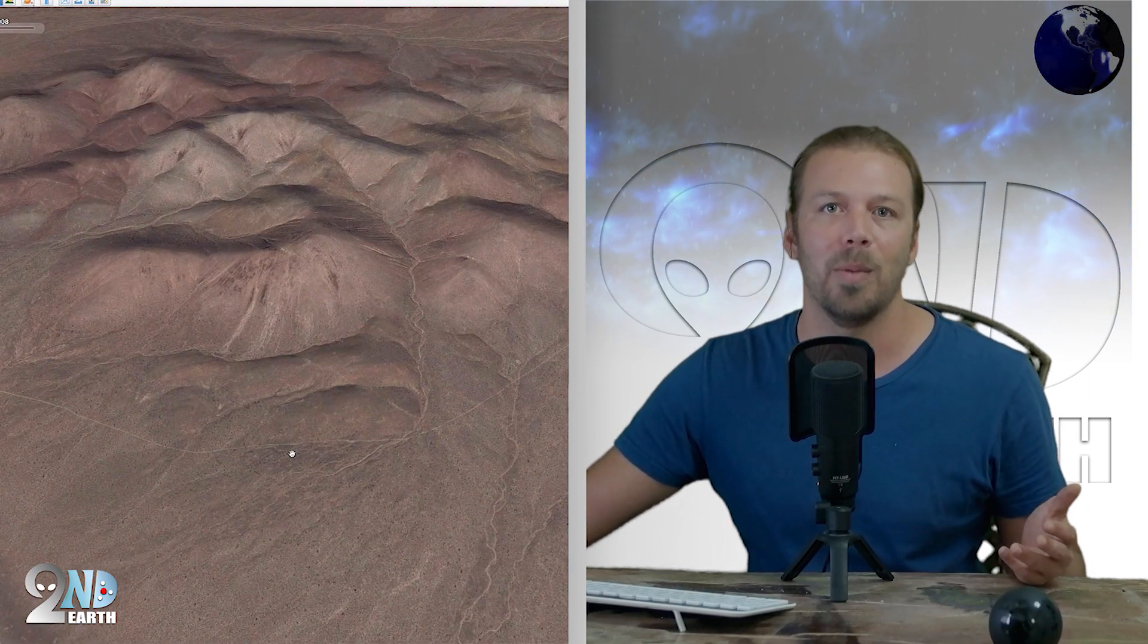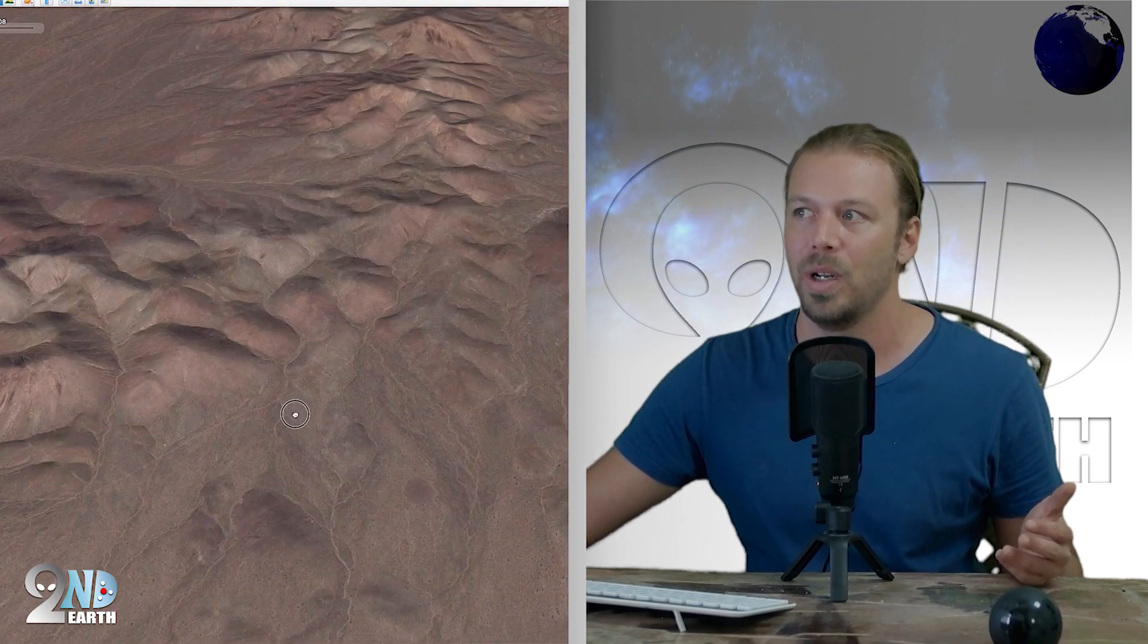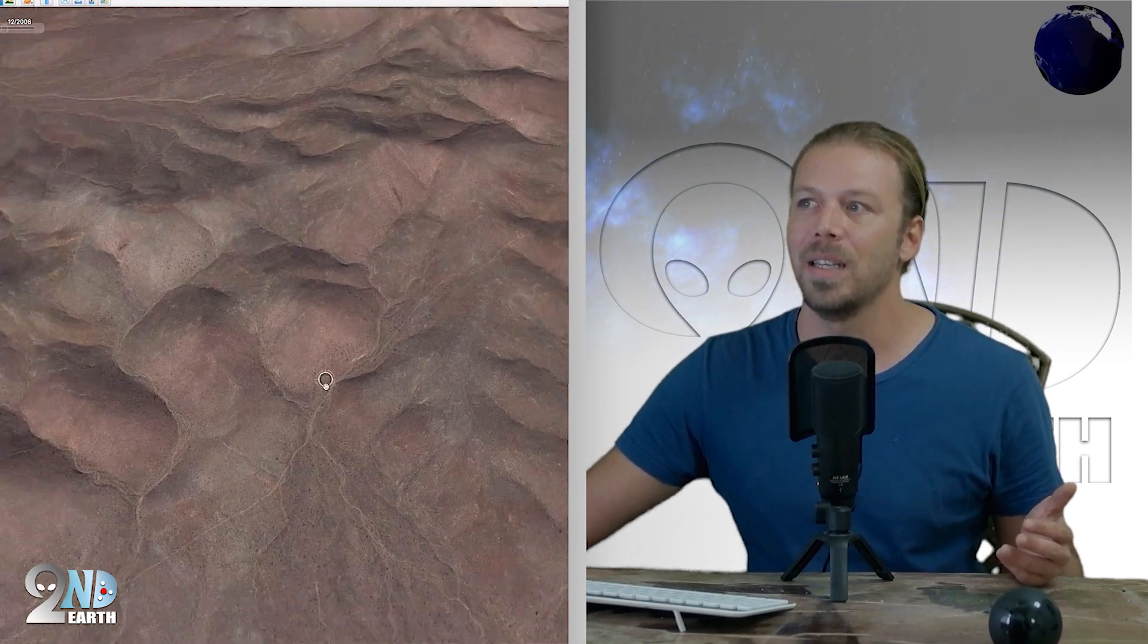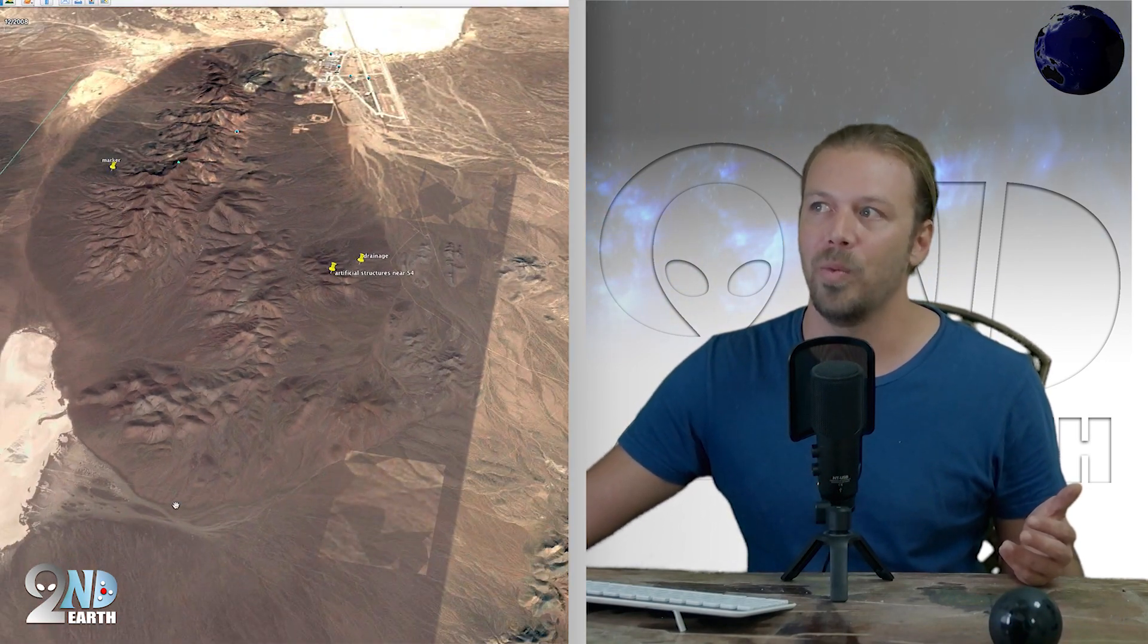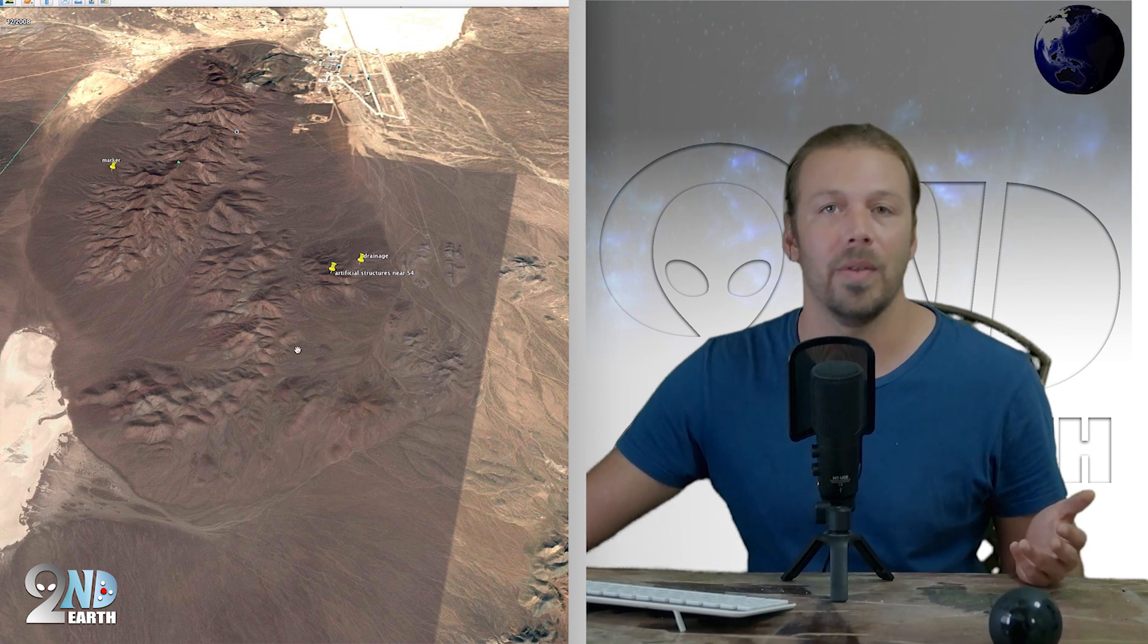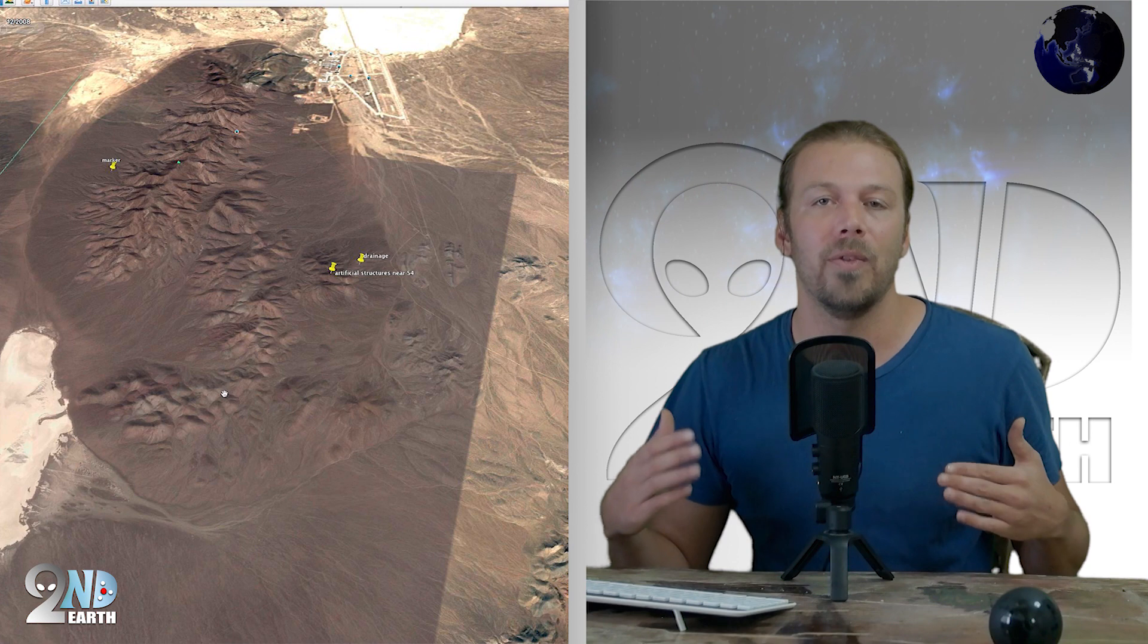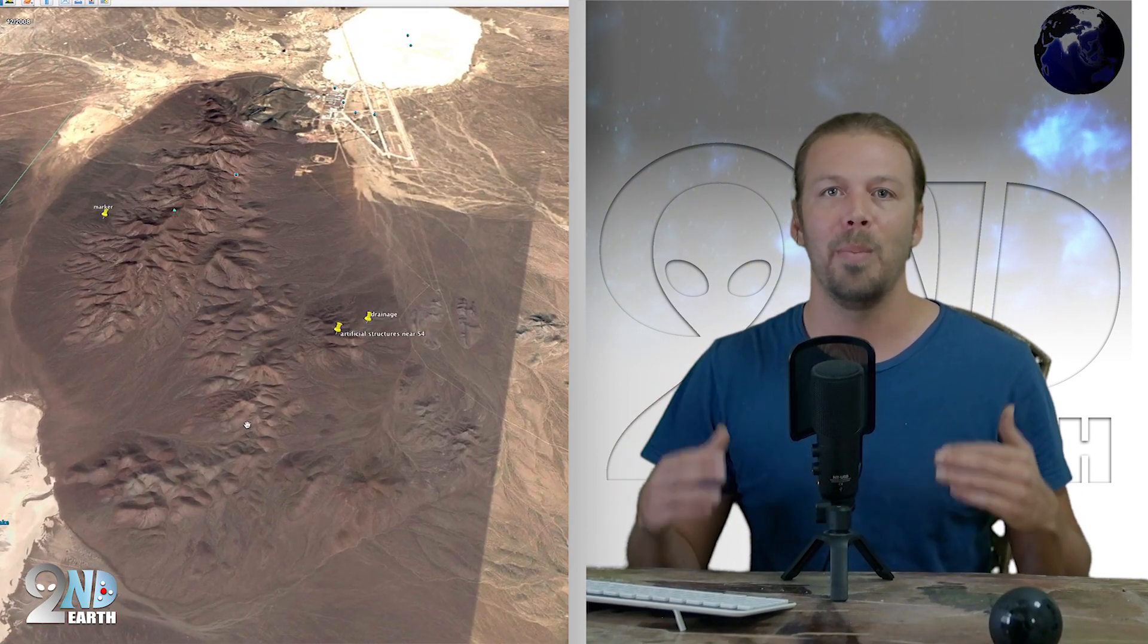So whereas we might have thought S4 was here, and there might be suspicious-looking structures over here, what I found most interesting is this inner road that, just from an urban layout perspective, it just doesn't make sense that you would need to have an inner road unless there was something that was in between the outer road and Area 51 itself. There has to be something there. And the fact is, people didn't know about this before Bob Lazar's case.